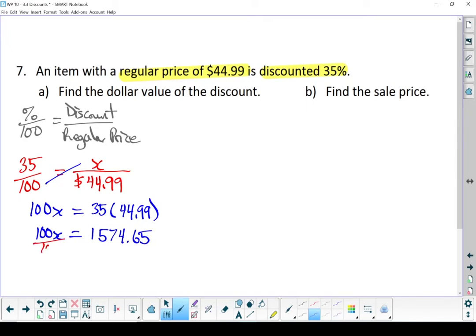Divide both sides by 100, and our discount is $15.75.